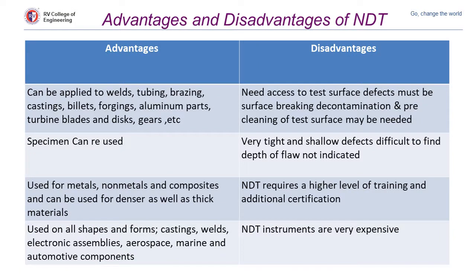Here are the basic advantages and disadvantages of using NDT. The main advantages are that it can be used for welds, tubings, brazing, and for aluminum parts, tubes, tube blades and discs. The specimen can be reused also. It can be used for composites and for all shapes like aerospace and marine structures and also for automotive components.